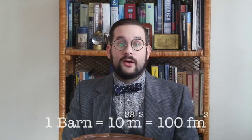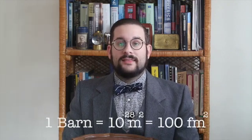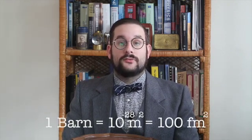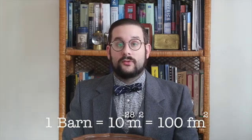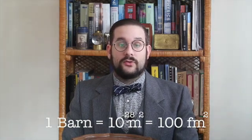Neutron cross-section is actually a rather interesting concept because it's measured in a unit called a barn, which is equivalent to 10 to the negative 28 meters squared, or around 100 femtometers squared, the approximate cross-sectional area of an atom of uranium. Neutron cross-section isn't actually a literal measure of cross-sectional area but rather of probability — the probability that a neutron will interact with a particular material, whether it will be captured and induce a fission, whether it will be absorbed, or whether it will be scattered.